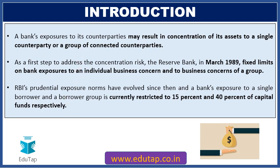A bank's exposure to its counterparties — the persons or entities to whom the bank has given loans — may result in concentration of assets to a single counterparty or group of connected counterparties. For example, a bank may grant most of its loans to Reliance Industries Limited, or to connected entities like Reliance Communications. This is problematic because if the bank is solely dependent on one entity, failure of that entity may affect the entire bank's operations.